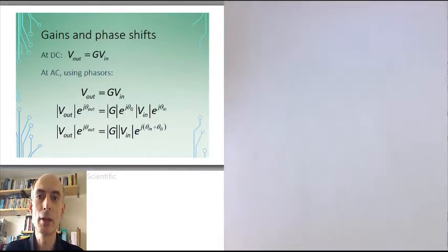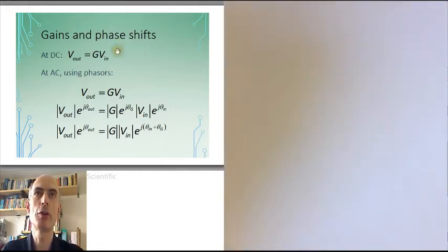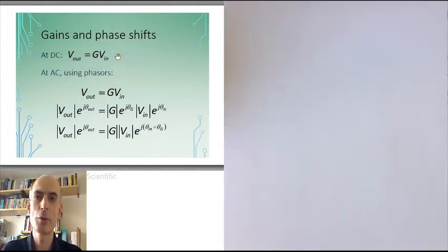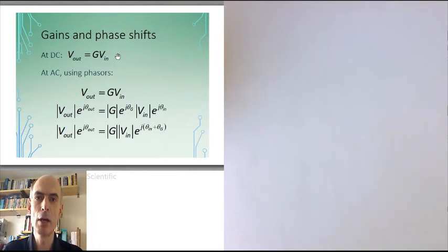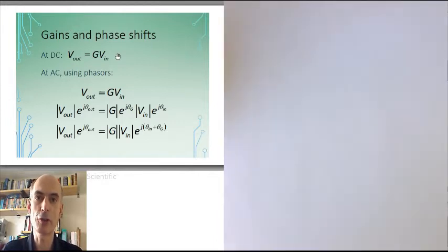At DC, the evaluation of gain is very straightforward. The gain is just the output voltage divided by the input voltage, so we can simply write the output voltage equals G, a constant real number, times the input voltage. With AC signals — and I'm only thinking of sinusoidally varying AC signals here — we can use the technique of phasor analysis, and write both the output voltage and the input voltage waveforms in terms of their phasor representations.